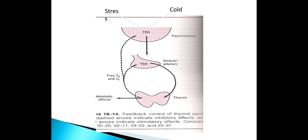Regulation is normally by negative feedback mechanism and autoregulation. Factors like stress and cold stimulate the thyrotropin-releasing hormone in the hypothalamus, which increases TSH in the anterior pituitary, thereby acting on the target organ resulting in metabolic effects through its free T3 and T4. The specific feedback mechanisms operate through the anterior pituitary and hypothalamus. Thyroid function is mainly regulated by pituitary TSH.